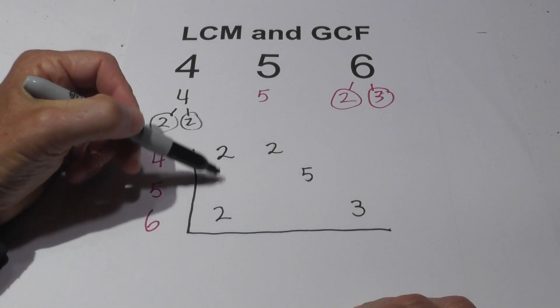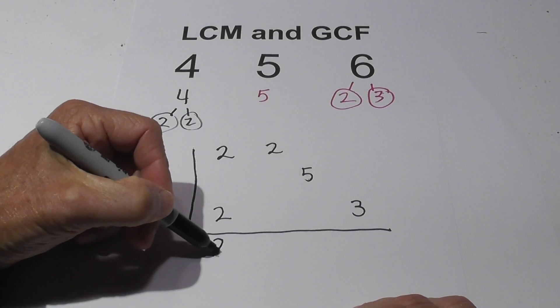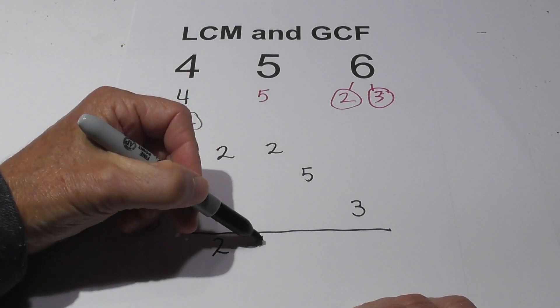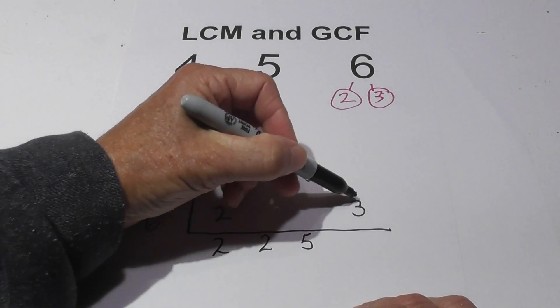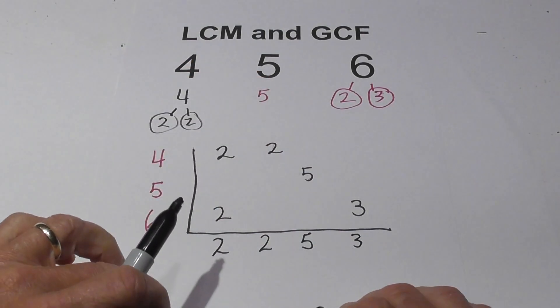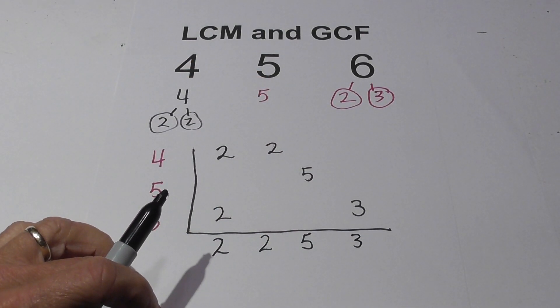So since I have two twos, I'm just going to bring down one two. Here I bring down one two, one five, and then three. And now for the LCM, I just multiply these together.